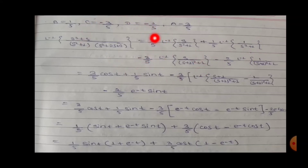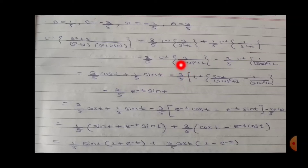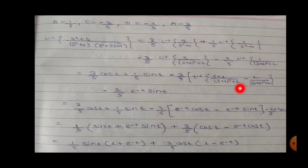Substituting values: 3/5 · Laplace inverse of s/(s²+1) plus 1/5 · Laplace inverse of 1/(s²+1) minus 3/5 · Laplace inverse of s/(s²+1) minus 2/5 · Laplace inverse of 1/(s²+1). Since s²+1 gives cos(t) and sin(t), and s+1 shifts give e^(-t)·cos(t) and e^(-t)·sin(t) terms.